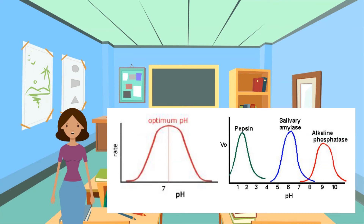Pepsin, an enzyme that works in the stomach, has a very low optimum pH because it needs to work in an acidic stomach environment. Amylase, an enzyme that works in the saliva of the mouth, has a fairly neutral optimum pH because the pH of the mouth is fairly neutral. A change in pH on either side of the optimum — a decrease or increase — will denature the enzyme, as extreme pHs destroy the bonds that hold the protein structure.